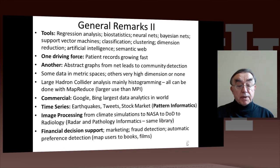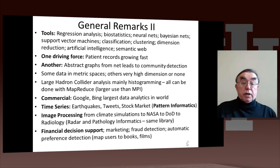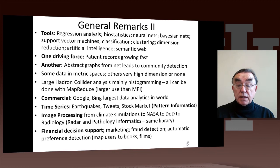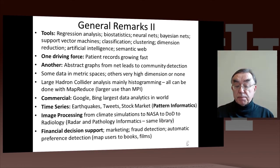One other application area we've not really discussed is financial decision support. Although we have discussed the marketing issues and mentioned that fraud detection is one aspect of this — that's typically anomaly detection, where you're looking for small outliers. Another one mentioned here is recommender systems to map users to books and films and things like that.